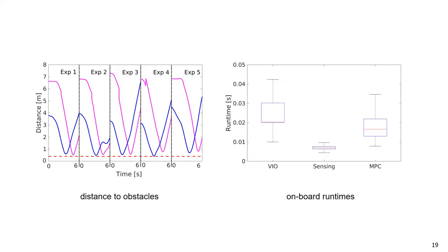We measured the distance between the MAV and the two obstacles using ground truth data, as shown in the left figure here. It shows that the collision-free condition was satisfied in all five runs. The right figure here gives the box plot of the onboard runtimes of each module in the system. It can be seen that the obstacle detection and tracking module is running very fast at around 60 Hz, and the model predictive control module is also very fast for real-time collision avoidance.